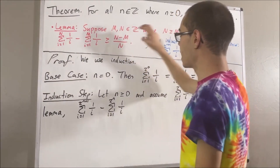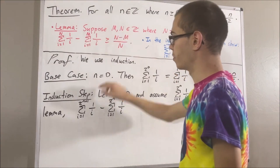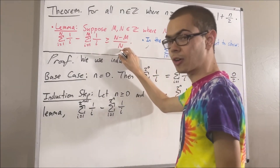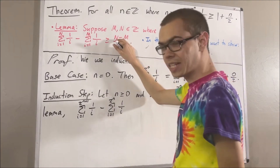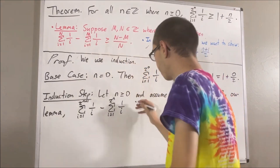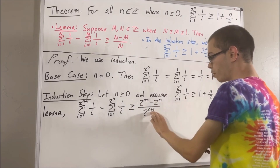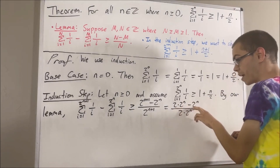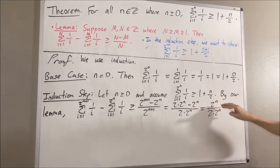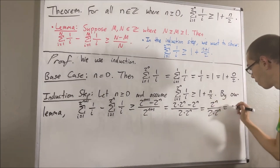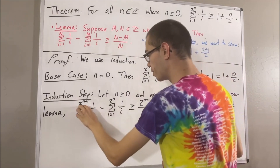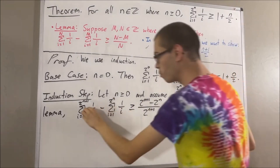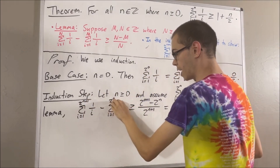By our lemma, if we take capital M to be 2 to the n and capital N to be 2 to the n plus 1, then this difference must be greater than or equal to capital N minus capital M over capital N, which means it must be greater than or equal to 2 to the n plus 1 minus 2 to the n, over 2 to the n plus 1. Now, 2 to the n plus 1 is equal to 2 times 2 to the n, and 2 times 2 to the n minus 2 to the n is equal to 2 to the n. So the 2 to the n's cancel out, and this is just equal to 1 half. So the sum with 2 to the n plus 1 minus the sum with 2 to the n is greater than or equal to 1 half.